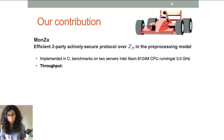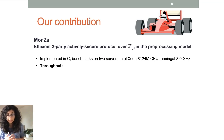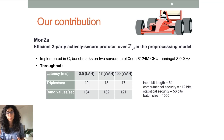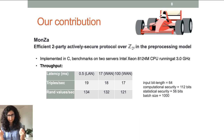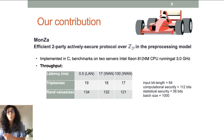Monza is also efficient in practice. We implemented the preprocessing phase in C and ran benchmarks. The throughput of the preprocessing phase — how many triples we generate per second — stays nearly the same even when the connection between the two parties is slow. With a LAN connection at 0.5ms latency, throughput is 90 triples per second. With a very slow connection at 100ms latency, we still get 70 triples per second — just two triples less.